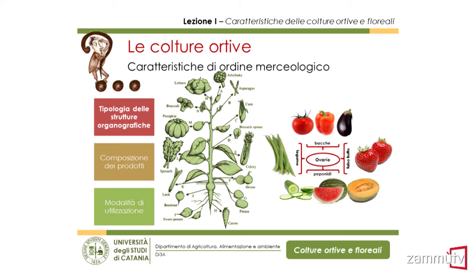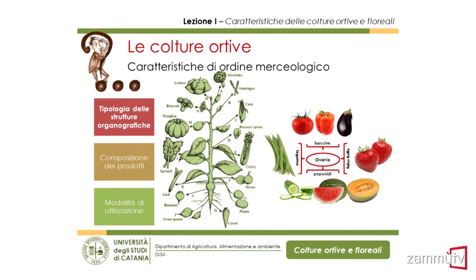Da un punto di vista merceologico, fra le colture ortive noi mangiamo quasi tutte le parti della pianta: la radice come la carota, germogli, fiori, frutti. Praticamente non c'è organo che non viene consumato. Inoltre, attraverso la selezione, l'uomo ha fatto sì che questi organi si sviluppassero in maniera abnorme — talvolta quasi mostruosa — così da avere gemme estremamente grandi che rappresentano la porzione edule.